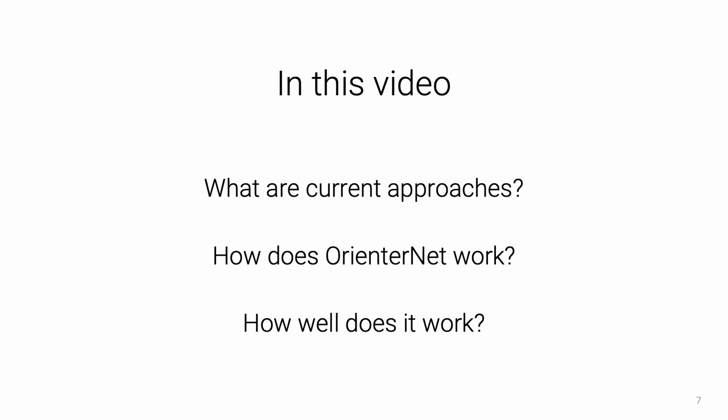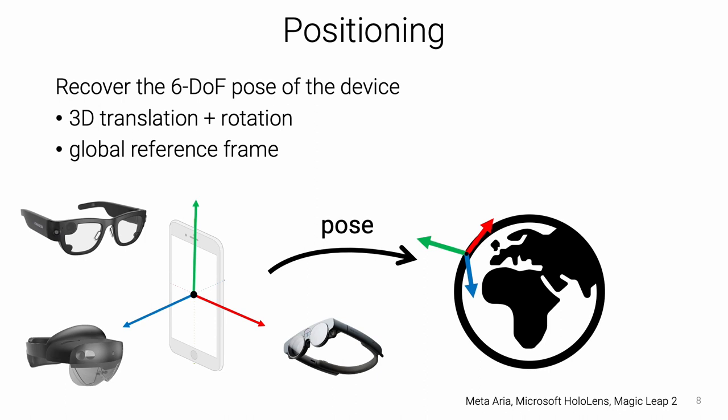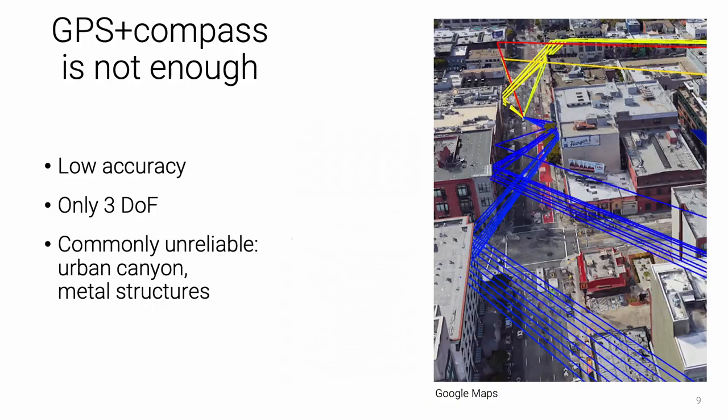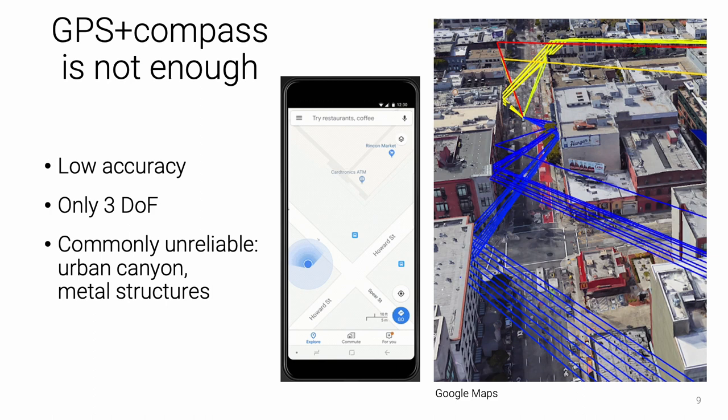Applications like augmented reality or robotics need accurate 3D positioning as translation and orientation in a global reference frame. Consumer-grade GPS and compass are not sufficiently accurate and are often unreliable due to multipath effects or magnetic anomalies.